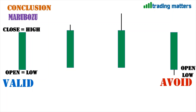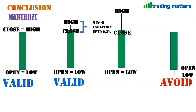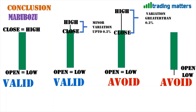In the second case, open equals low and close differs slightly from high. Using the formula, if the percentage variation is up to 0.2%, we place the trade and consider it a valid Marubozu. In the third case, open equals low but the difference between close and high is large — greater than 0.2% — so we do not consider it a Marubozu and do not place any trade.